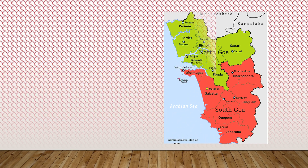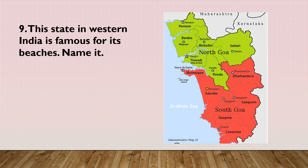Now, see the map, children. This state in West India is famous for its beaches. It is Goa, and it is divided into two districts — North Goa and South Goa. The capital of Goa is Panaji, and it is the smallest state by area. The festival celebrated here is Carnival. The language spoken here is Konkani and Marathi. The state animal is Gaur, state bird is Black-crested Bulbul, and state tree is Matti.